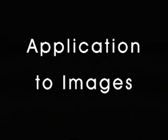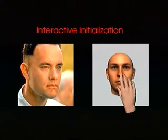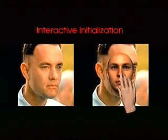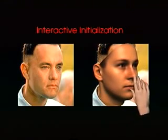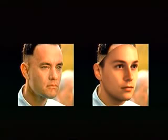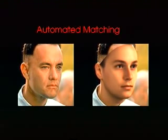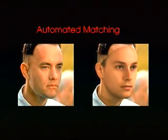We now reconstruct 3D shape and texture in order to animate a face, given only a single photograph of a person. First, we manually align the average face to the target image, roughly estimating position, size, orientation, and illumination. Then, a fully automated algorithm finds the best reconstruction of the face within the morphable model.